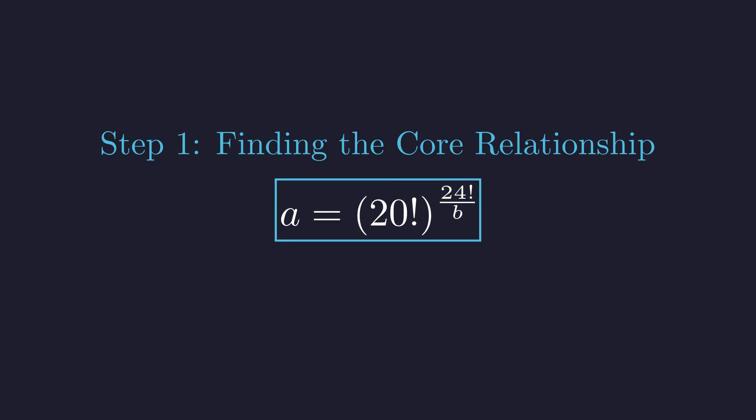Now here's the key insight. A has to be a natural number. This innocent-looking requirement is about to tell us everything. You might wonder, what if the exponent is a fraction? Could 20 factorial be, say, a perfect square?